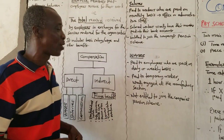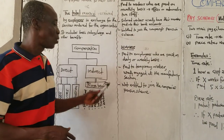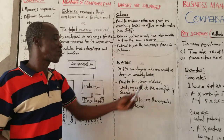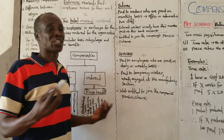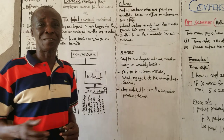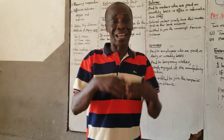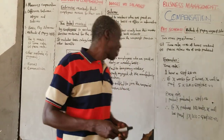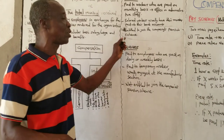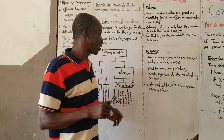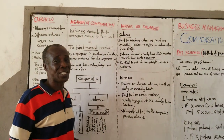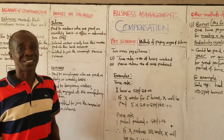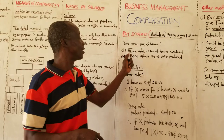Now let's come to wages. Wages are paid to employees on a daily or weekly basis, as I've already explained. They are paid to temporary workers, whilst salaried workers are relatively permanent workers. Wages are usually for those engaged at the manufacturing section of the organization. If it is a building firm, you go there, you work, and at the end of every day they pay you. If you carry the mortar, at the end of the day they pay you. If you are making blocks, at the end of the day they pay you according to the agreement. Wage workers are not entitled to join the organization's pension scheme. That is the difference between wages and salaries.